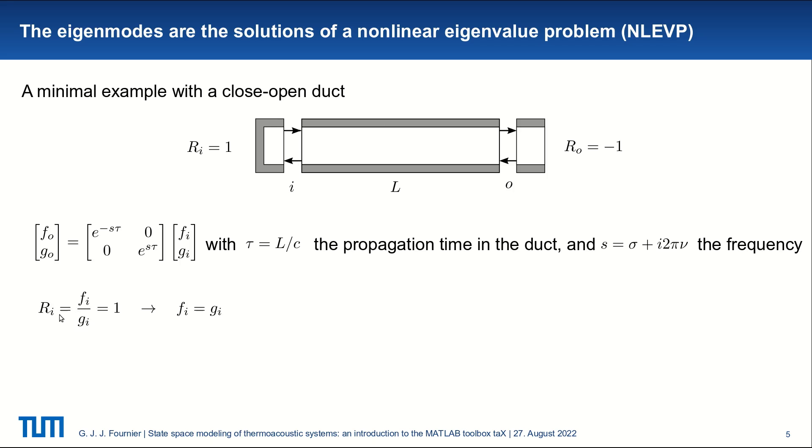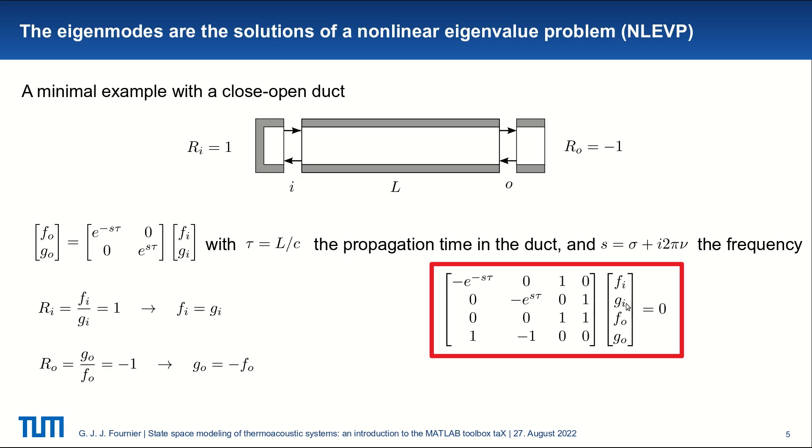Then if we also write the equations for the boundary conditions, we have at the inlet the reflection coefficient, which is equal to 1, which gives one relation relating Fi and Gi. And we can do the same for the outlet, also obtaining an equation relating Go and Fo. And if we rewrite all these equations, we can obtain the system's matrix. Now we have a system with four equations with four unknowns, and this admits non-trivial solutions if the determinant of this matrix is null, which leads to the dispersion relation.